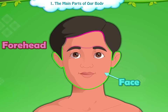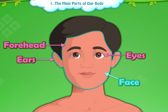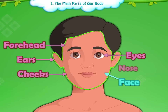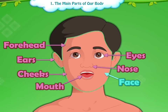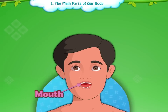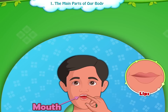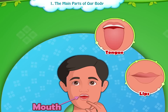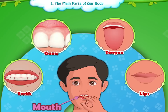The face has a forehead, two eyes, two ears, two cheeks, a nose and a mouth. The mouth consists of lips, tongue, gums and teeth.